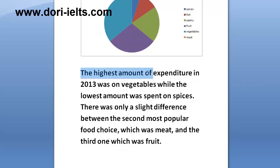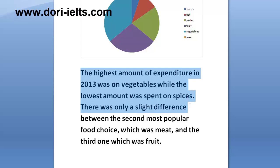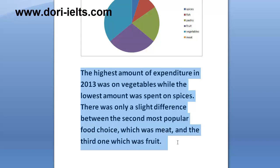The highest amount of expenditure in 2013 was on vegetables, while the lowest amount was spent on spices. There was only a slight difference between the second most popular food choice, which was meat, and the third one, which was fruit.